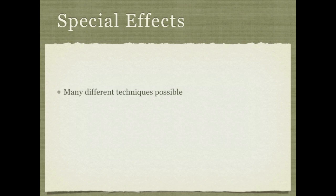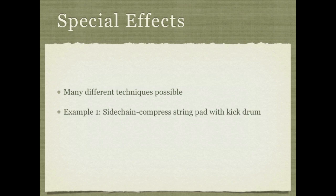There are several special effects you can use sidechains for, and you just have to experiment to find which ones fit your style. One of the most common is having a sustained part, such as a string synthesizer, with a kick drum in its sidechain so the strings get quiet every time the kick drum hits and then come back up. This is an even more extreme example of the pumping and breathing you hear when you put a compressor on a mix of drums.